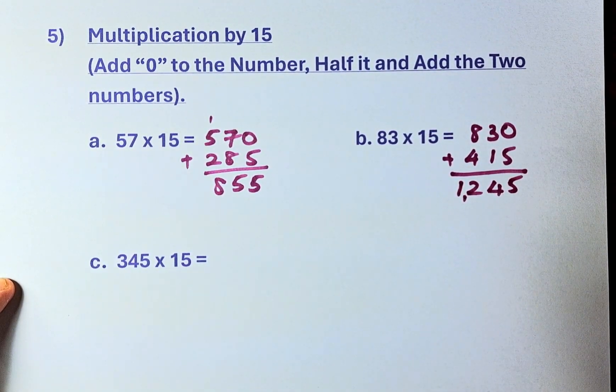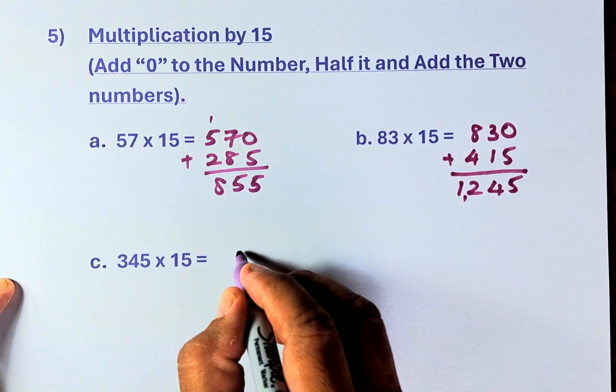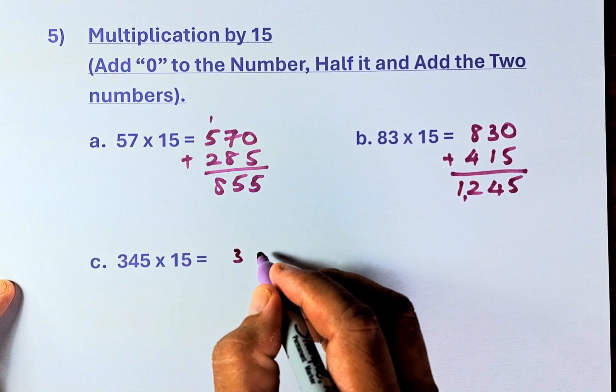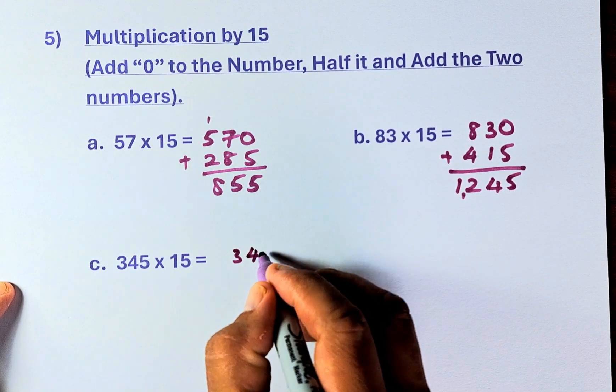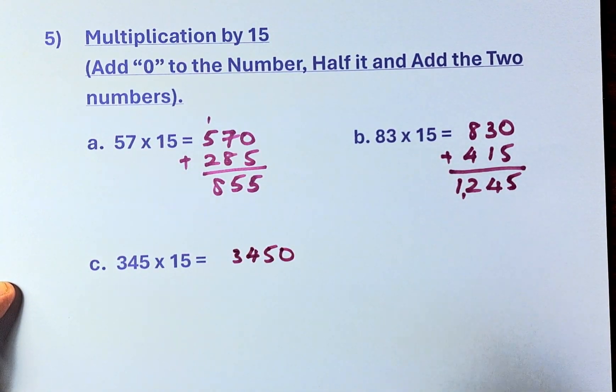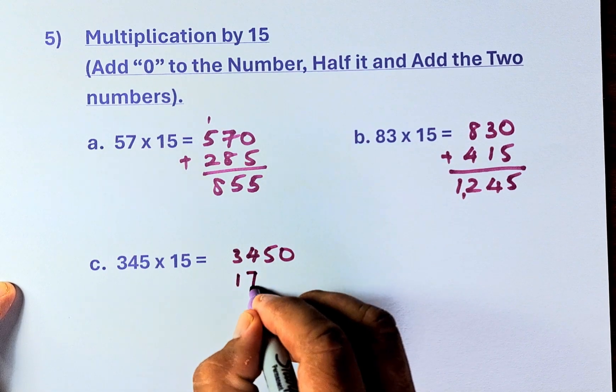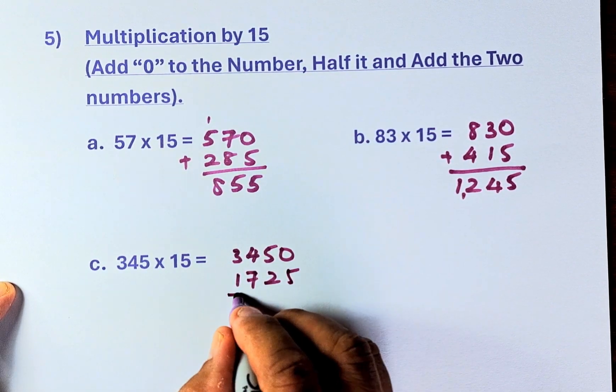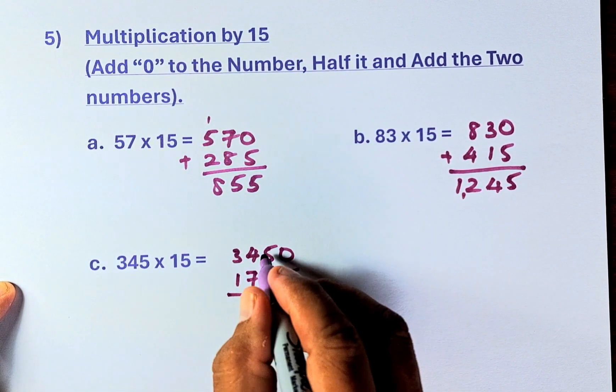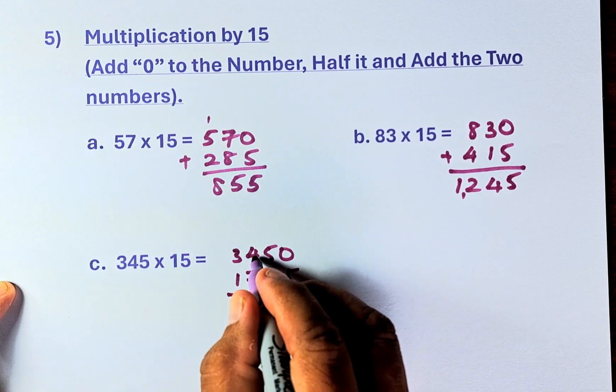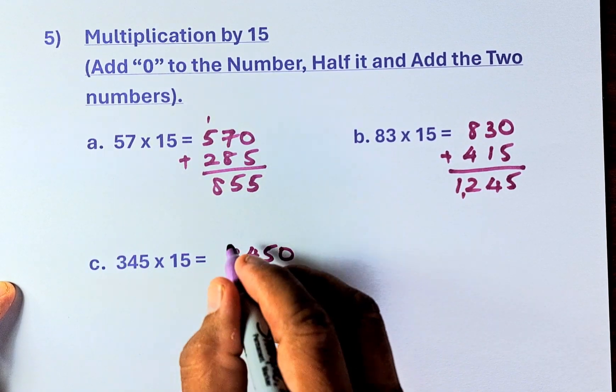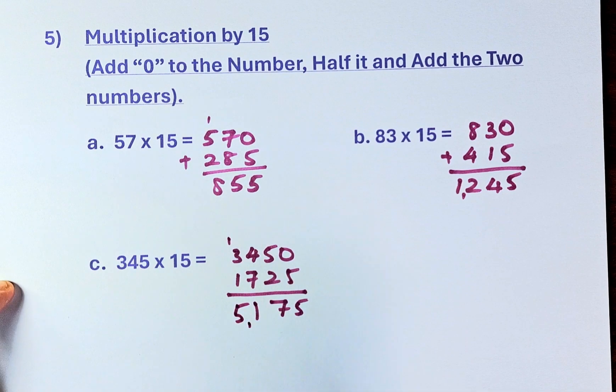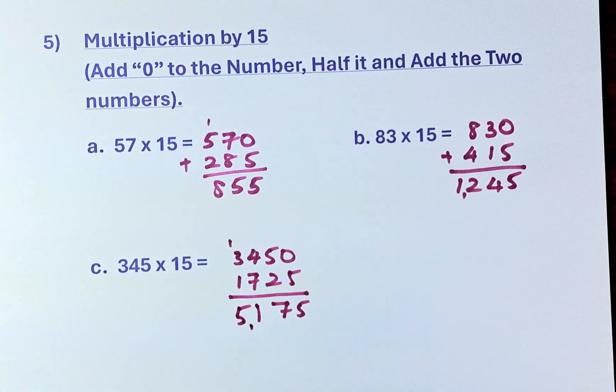Last but not least, we have 345 times 15, so it's going to be 3, 4, 5, 0, that is you put a 0, half it is going to be 1725. Add the 2 numbers, 0 plus 5 is 5, 5 plus 2 is 7, 4 plus 7 is 11, carry up 1, and the answer is 5,175.